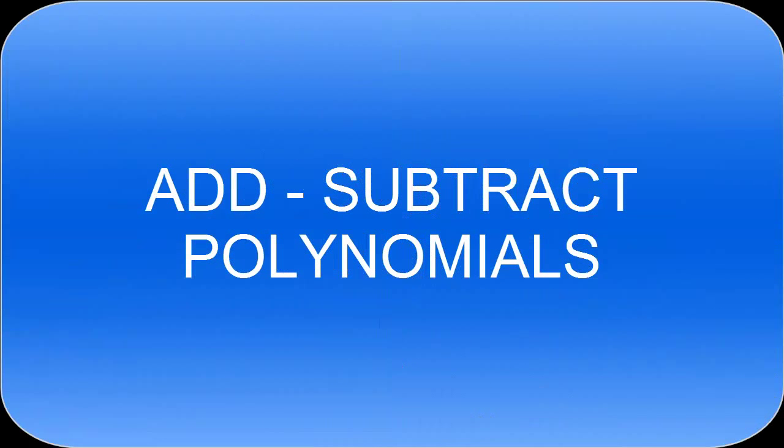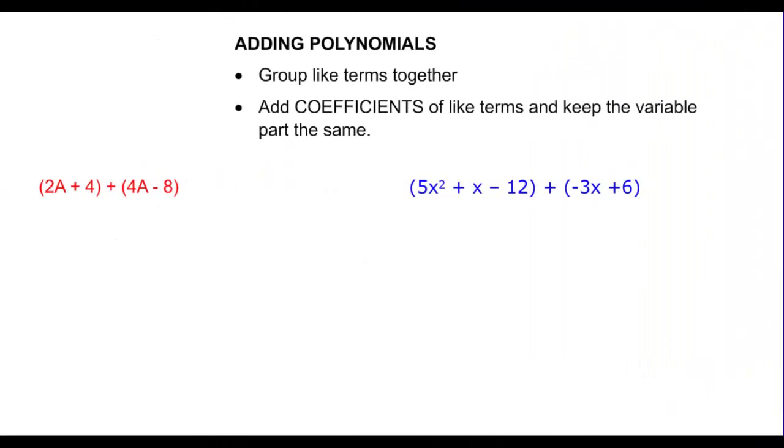This video is going to talk about adding and subtracting polynomials. So if I want to add polynomials, the idea is to group your like terms together and then add the coefficients of the like terms. We're going to keep the variable; all we have to add are the coefficients.